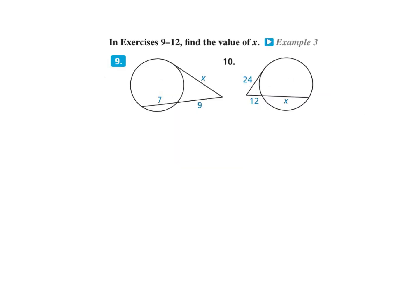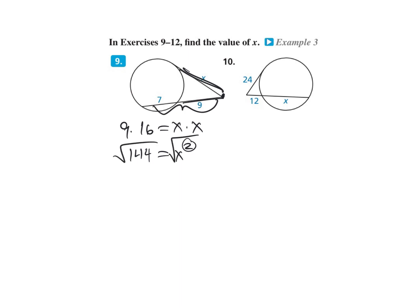Number 9: find the value of X. The vertex is on the outside. The part 9 times the whole piece 16 equals the part X times the whole, which is just X again — since it's a tangent. So X squared equals 9 times 16, which is 144. Take the square root: X equals 12. X is a distance, so it can't be negative.